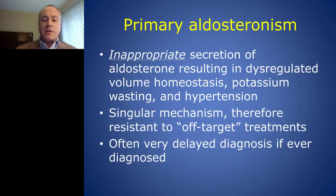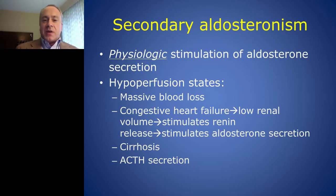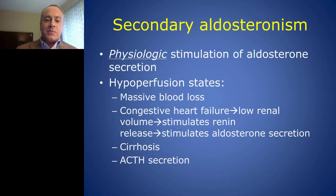As opposed to primary aldosteronism, secondary aldosteronism is actually the normal physiologic stimulation of aldosterone in response to a hypoperfused state. This might be a response to massive blood loss — the body reactively increases production and secretion of aldosterone in order to maintain circulating blood volume. There are specific clinical conditions in which we also see this, such as congestive heart failure and cirrhosis.